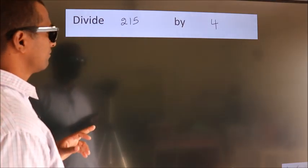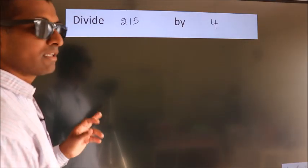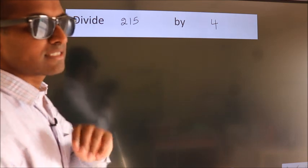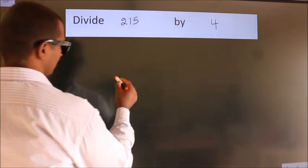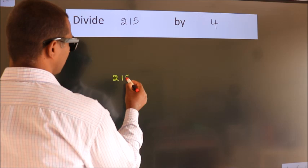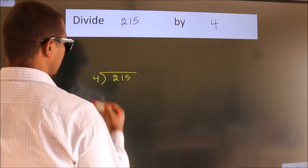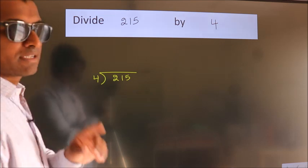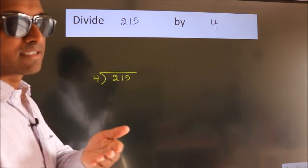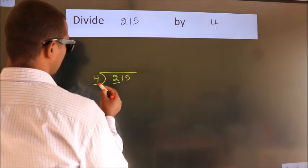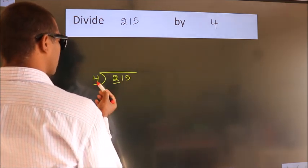Divide 215 by 4. To do this division, we should frame it in this way: 215 here, 4 here. This is your step one. Next, here we have 2. 2 is smaller than 4.